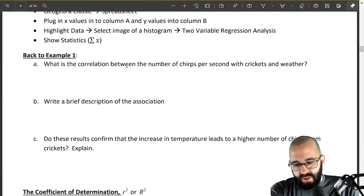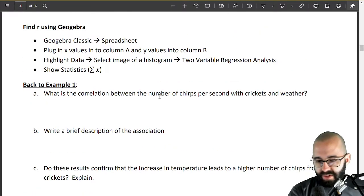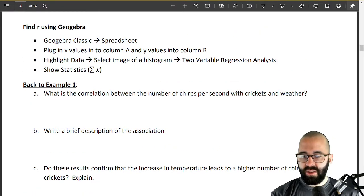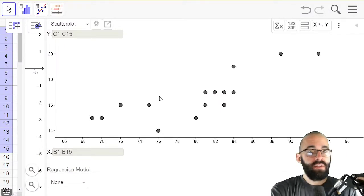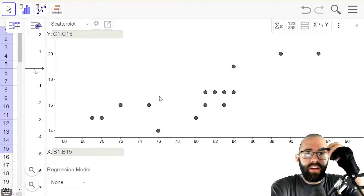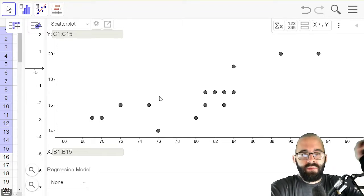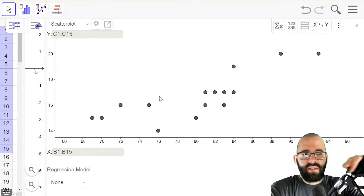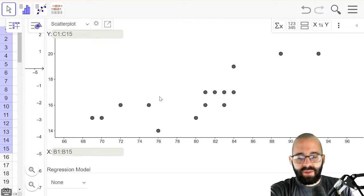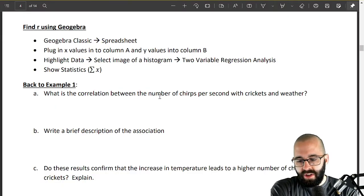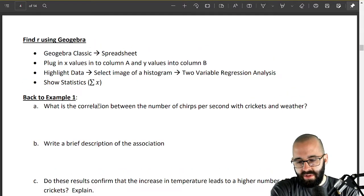So what is the correlation between the number of chirps per second with crickets and weather? So in terms of our explanations yes it looks roughly linear. If we tried to model this we could probably model this with a straight line. We wouldn't model it with a parabola or with a sine graph or with a logarithmic anything. We could model this with a straight line. So for 1a we could say it's linear.